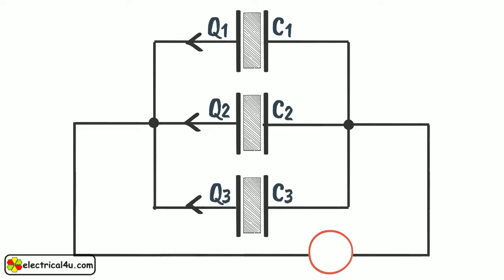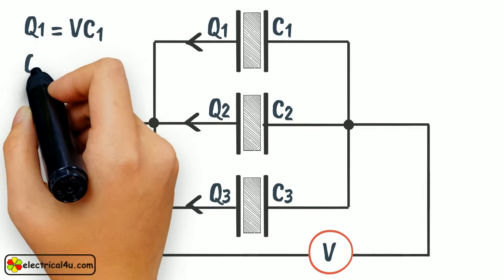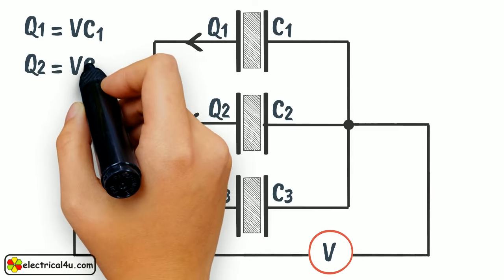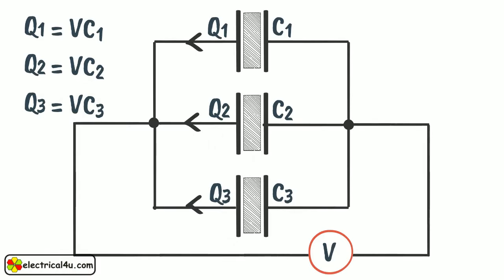If the voltage of the source is V, then Q1 equals V into C1, Q2 equals V into C2, and Q3 equals V into C3.